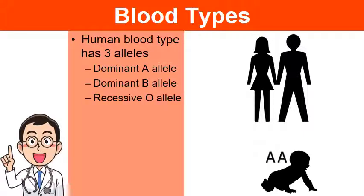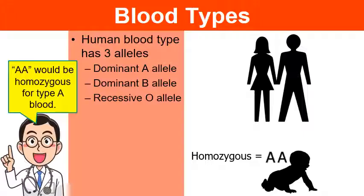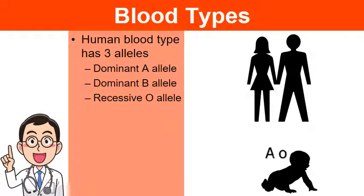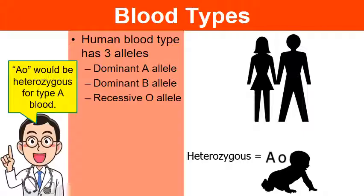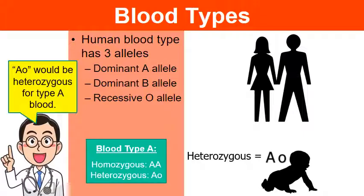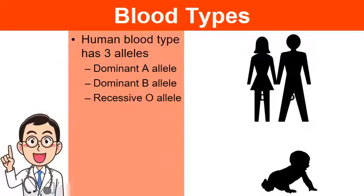If a child receives an A allele from mom and an A allele from dad, this is homozygous — two capital A's — and the child would have type A blood. If a child receives a dominant A allele from one parent and a recessive O allele from the other, A is dominant, so this is still blood type A, but because the child receives one dominant and one recessive allele, we call this heterozygous. So for blood type A, there are two possible genotypes: homozygous and heterozygous.